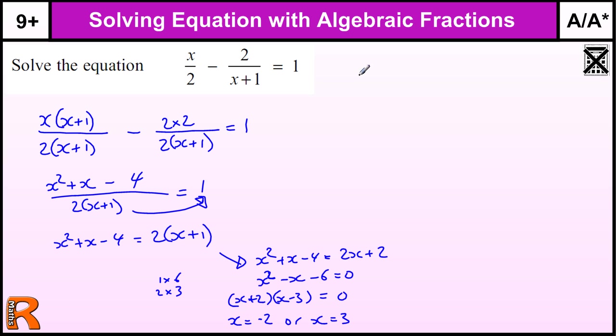Multiplying the whole equation by 2: (x/2)×2, and the rest also times 2. The reason I do this is to get rid of the 2 in the denominator. So I have x - 4/(x+1) = 2. When multiplying a fraction by a number, you just multiply the numerator.